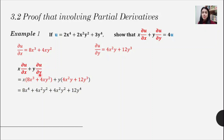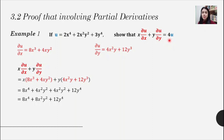Expanding gives us: 8x to the power 4, then 4x squared y squared, then another 4x squared y squared, and finally 12y to the power 4. We can see that both 4x squared y squared terms are the same, so we add them together to get 8x squared y squared. Comparing this to the required result of 4u, we need to factor out 4.